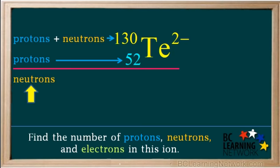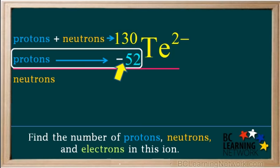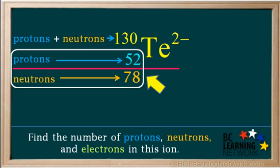Now we can calculate the number of neutrons. It is the total number of protons plus neutrons, or the mass number 130, minus the number of protons, or the atomic number 52, which comes out to 78. So the ion has 52 protons and 78 neutrons.